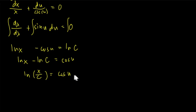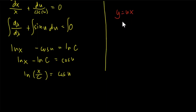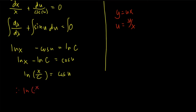We now substitute back using our assumption that y = ux, so u = y/x. Therefore our final answer is ln(x/c) equals cosine(y/x).